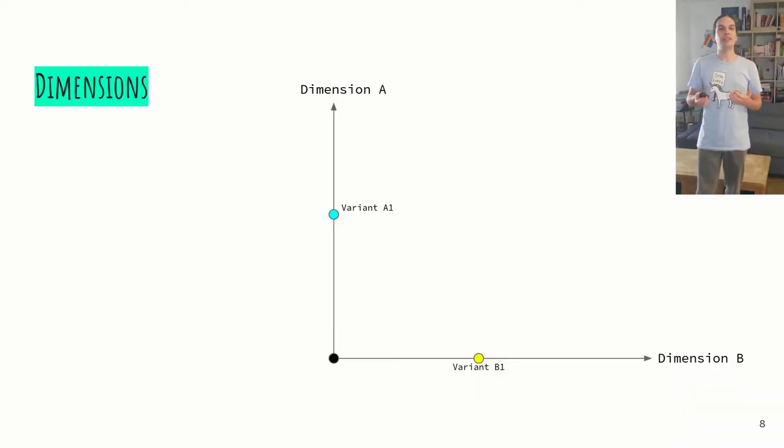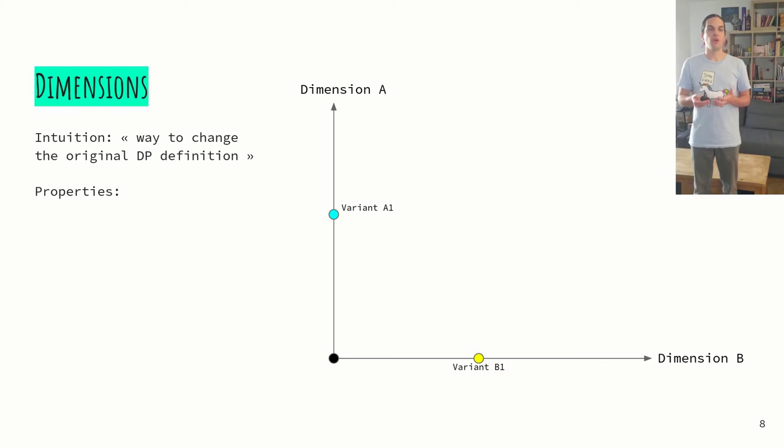A first natural approach is to classify definitions in categories, depending on how they change the original definition. We quickly realized that this wouldn't work. The problem is that a number of variants do multiple changes to the original definition. Instead, we use the concept of dimensions. Dimensions are ways you can change the original definition. They have two characteristics. The first one is that you can combine two variants from different dimensions. The second one is you cannot combine two variants from the same dimension.